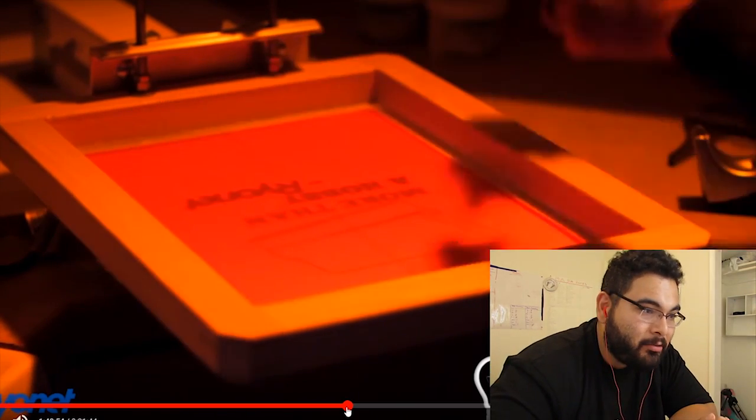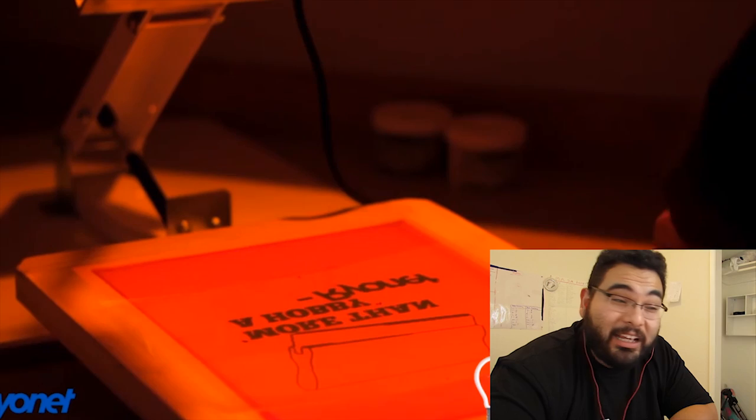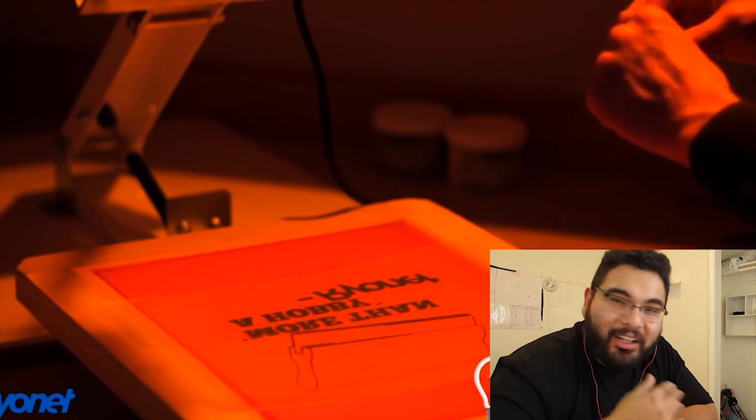Now see how he's in the light-sensitive room and now he's bringing the screen down. The transparency is stuck on the screen with tape. He's putting a lot of tape so the design doesn't move, because if the design moves while it's burning, you ruin that whole screen.